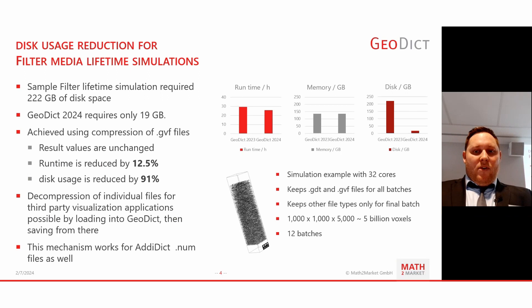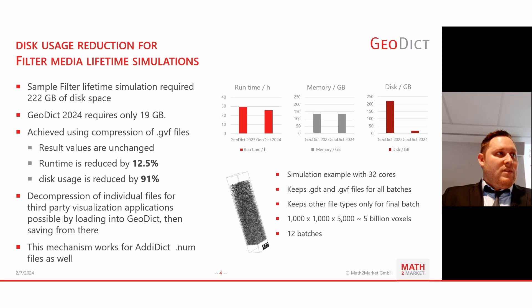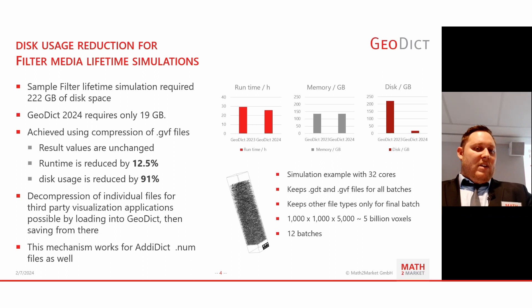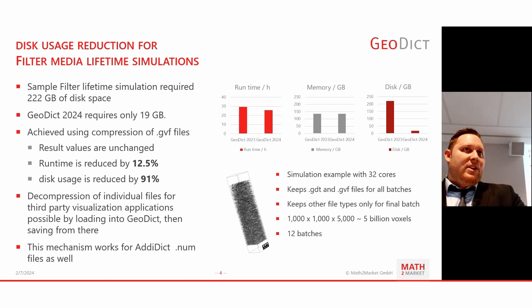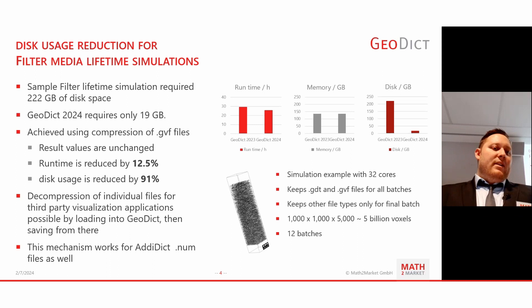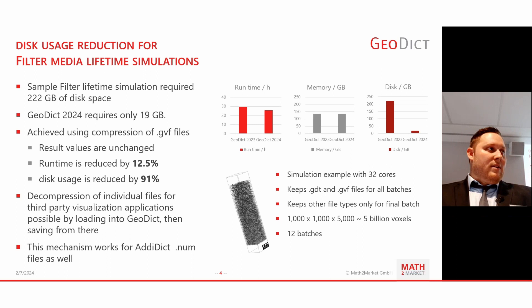One very large improvement, already advertised in yesterday's second presentation, is that we significantly improved the disk usage for filter lifetime simulations. In one example, with a structure of 5 billion voxels, the storage for 12 batches of particles would normally have been 222 gigabytes in the old version of GeoDict. Now, by using compressed files in GeoDict 2024, this is reduced to 19 gigabytes in total. The results are unchanged — the same results as in previous versions. By reducing disk usage by 91%, we also reduce the runtime to 12.5% for filter lifetime simulations.